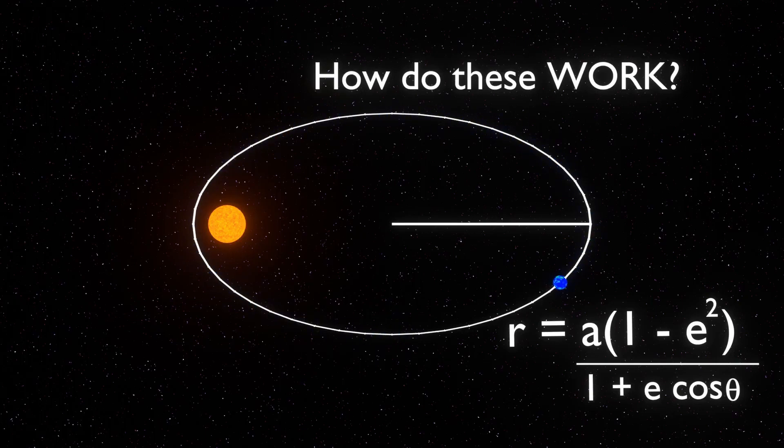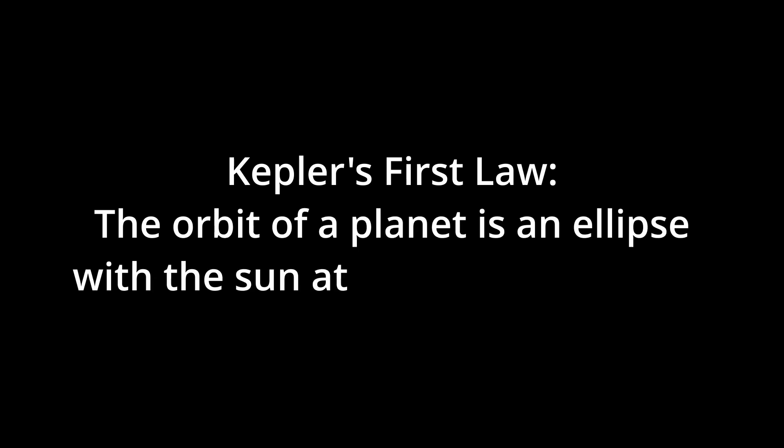Kepler's laws define planetary motion of orbits around the Sun. The first law states that the orbit of a planet is an ellipse with the Sun at one of the two foci.